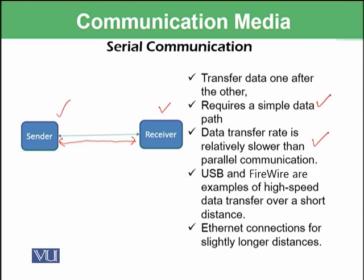USB and FireWire are examples of high-speed data transfer over a short distance and are a form of serial communication. For slightly longer distances, such as offices, universities, or smaller buildings, Ethernet connections are also a form of serial communication.